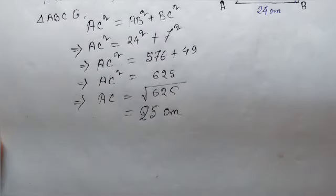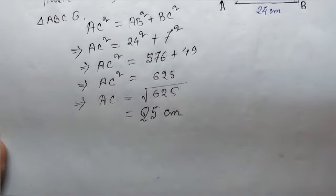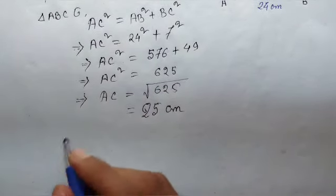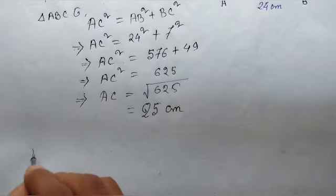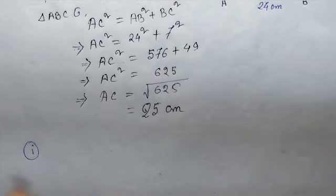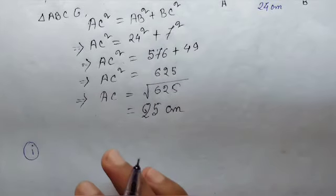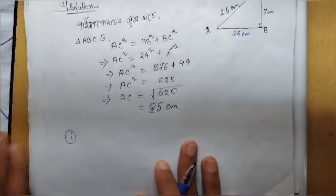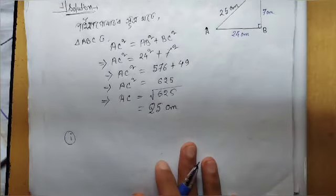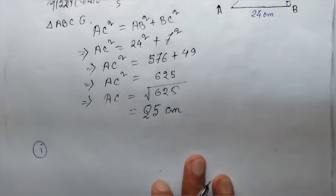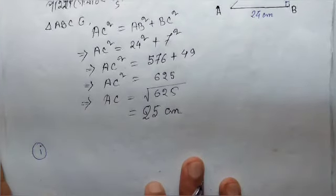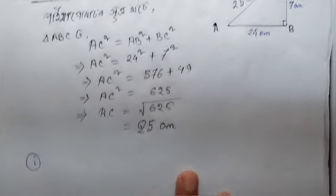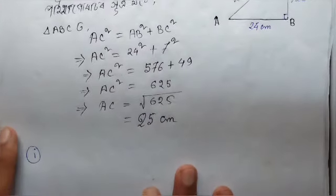Therefore, let us find the trigonometric ratios. We are going to use the first slot.